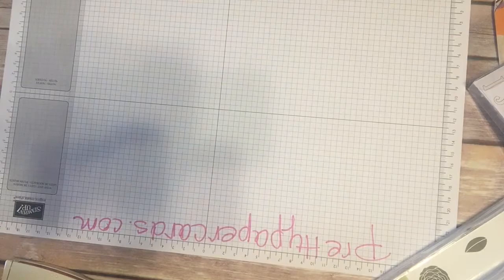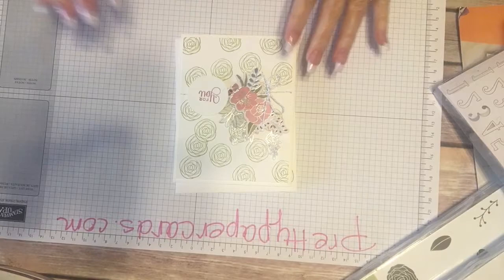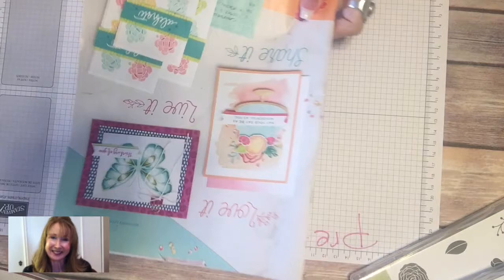Let me turn the camera down and show you in the catalog. Here you see PrettyPaperCards.com at the top. Here's the card we're going to make today. Let me open the new catalog and show you for a minute. This is the Occasions catalog and this stamp set is fabulous.